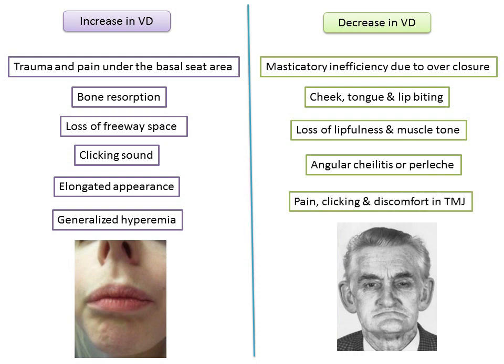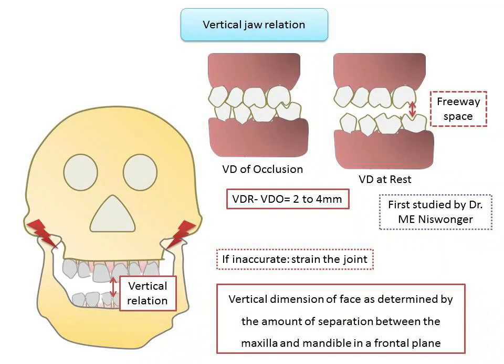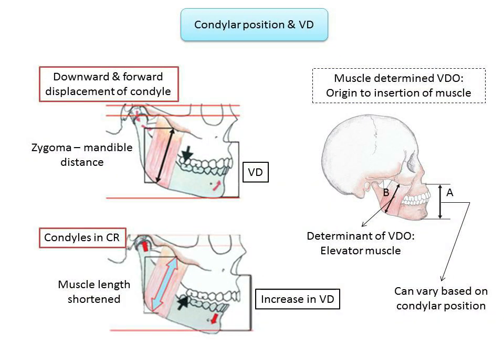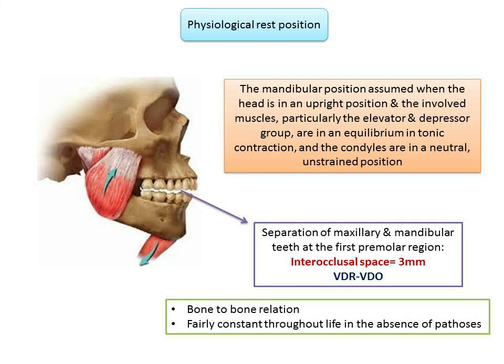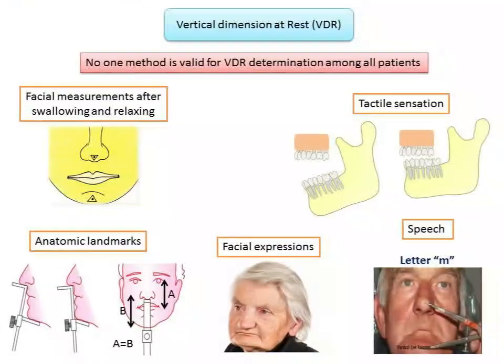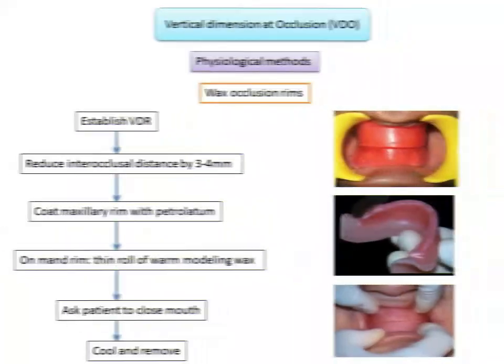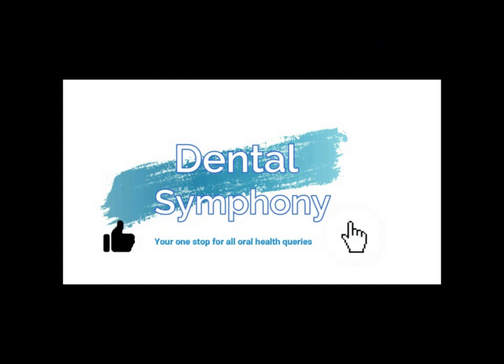Overclosure may also cause pain in the temporomandibular joint, probably due to strain of the joint and associated ligaments. This concludes the discussion on vertical dimension — covering VDO, VDR, freeway space, the importance and principles of vertical dimension, the various methods for recording VDR and VDO, and the effects of increase and decrease in vertical dimension.